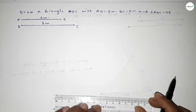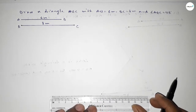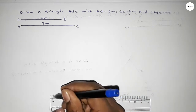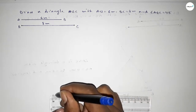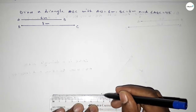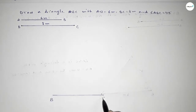Now first we have to draw a straight line of length 8 centimeter — 0, 1, 2, 3, 4, 5, 6, 7, 8. Drawing here a line of length 8 centimeter and taking here point B and here point C.